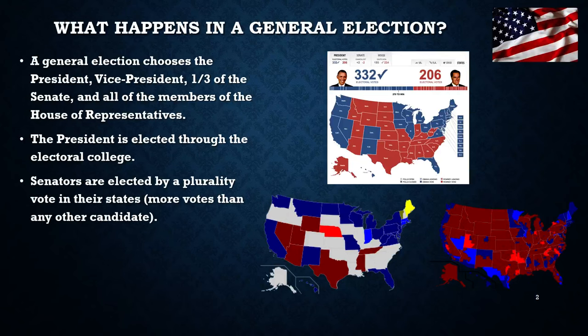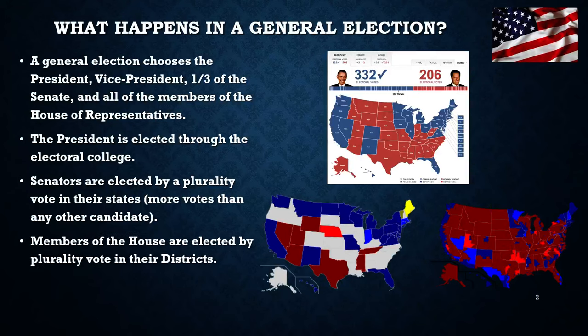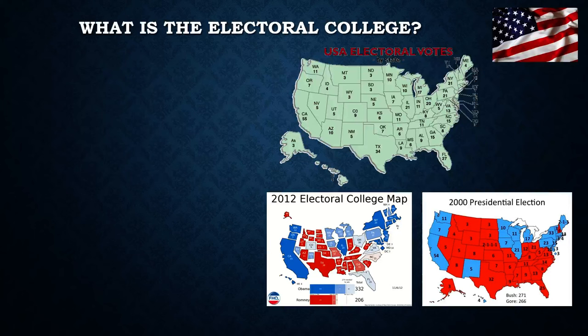Senators are elected by a plurality vote in their states, meaning whoever gets the most votes, whether it's above 50% or not, wins. If you have three or four candidates running against each other, whichever one gets the most votes becomes the senator from that state for the next six years. Members of the House of Representatives are elected by individual districts, and depending on which state you live in, there are a different number of districts.